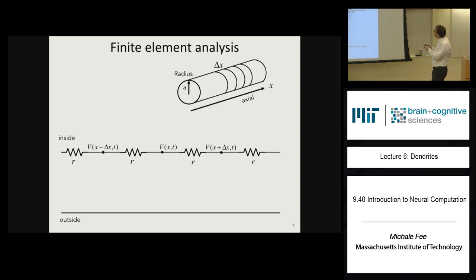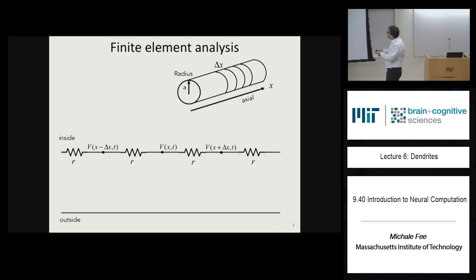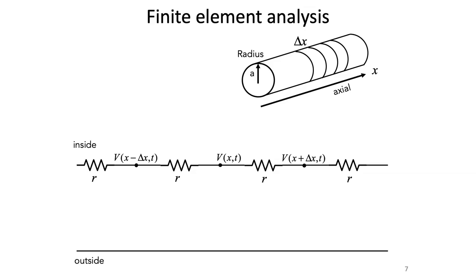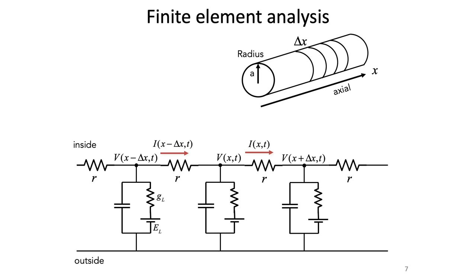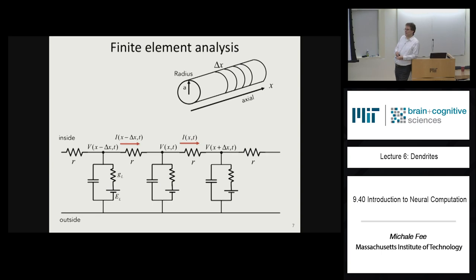We can write down the current in every other slice of the dendrite — I(x − Δx, t). We'll model the membrane in each of those slices as well. That is the basic finite element model of a dendrite — each piece of membrane in each slice, with the model including a capacitor and a conductance.